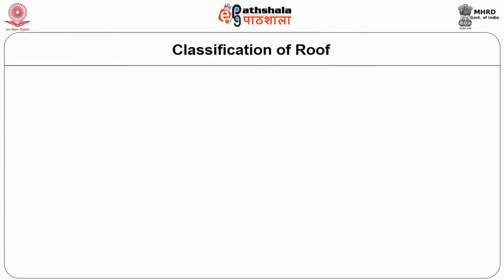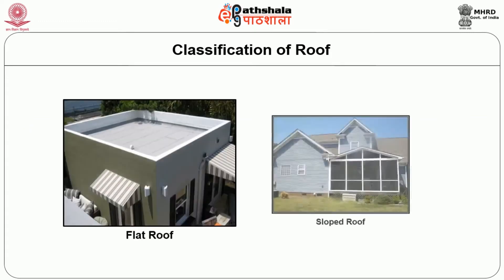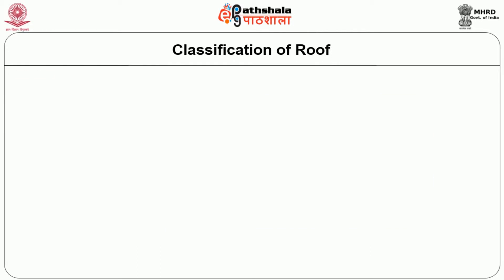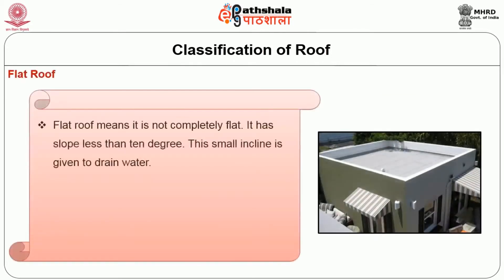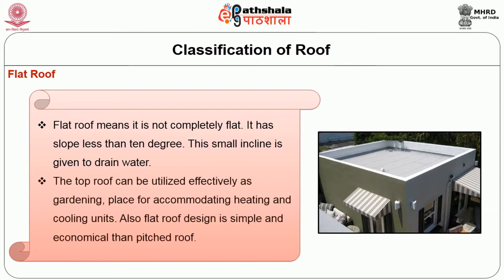Generally, roofs are classified into flat roof and pitched or sloped roof. A flat roof is not completely flat — it has a slope of less than 10 degrees. The small inclination is given to drain water. The top of a flat roof can be utilized effectively as a gardening space or for accommodating heating and cooling units. Flat roof design is simple and more economical than a pitched roof.